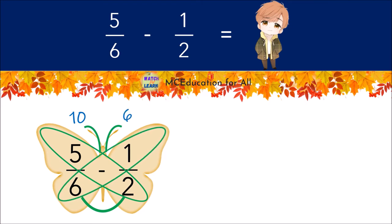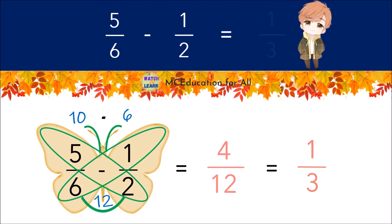Now we multiply our denominators and put it inside of the body. Six times two equals twelve. Then subtract the numbers in our antennas. Ten minus six equals four. Four is our numerator and twelve is our denominator. After, let's simplify. Four-twelfths is equal to one-third. Therefore, the answer is one-third.